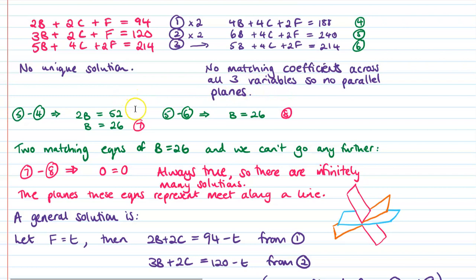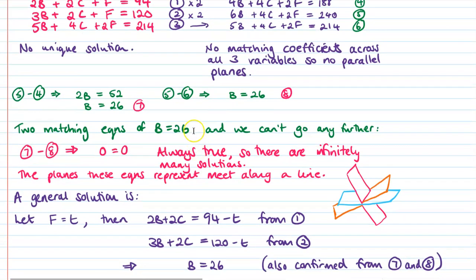So now carrying on solving algebraically. So I've relabeled my equations up at the top here. So they're equation 4, 5 and 6. If we do 5 minus 4, we get B as 26. If we do 5 minus 6, we get B as 26. So we can at least solve to get B. We got two matching equations of B equals 26.